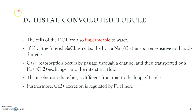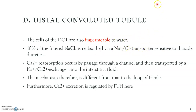Next is the distal convoluted tubule — D is DCT, distal convoluted tubule. Again, the cells of the DCT are also impermeable to water. About 10% of the filtered sodium chloride is reabsorbed by the sodium chloride transporter, which is sensitive to thiazide diuretics. Just remember that about 10% of the sodium chloride which has been filtered came from the PCT through the descending loop of Henle and then through the DCT, where it is reabsorbed via this transporter.